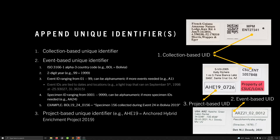The third type of unique identifier I use are project-based unique identifiers — some kind of alphanumeric code to denote the project. In this case, AHE19 denotes Anchored Hybrid Enrichment 2019, meaning started in 2019. This is the 726th specimen to get that project-based unique identifier.